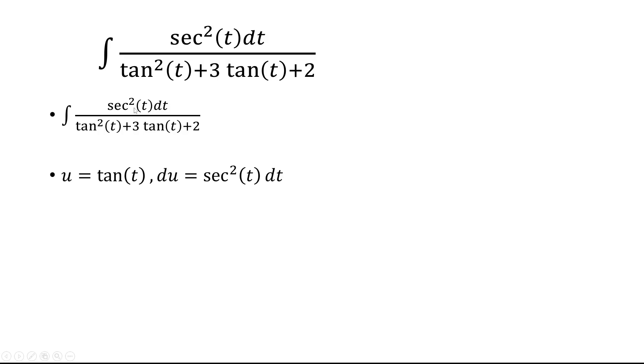The top becomes du, and in the bottom we have u squared plus 3u plus 2, which can be factored into u plus 2 times u plus 1.